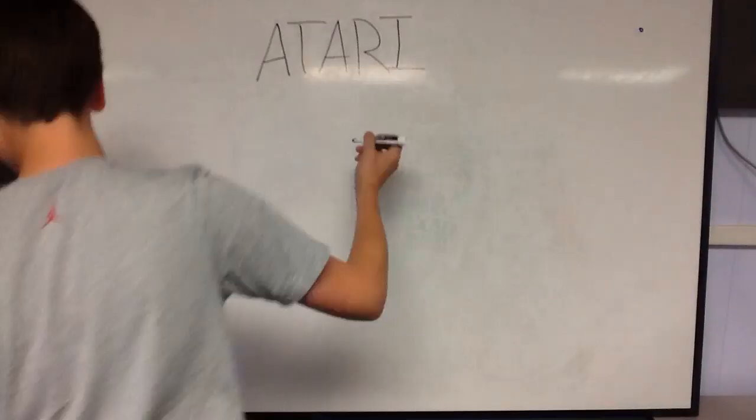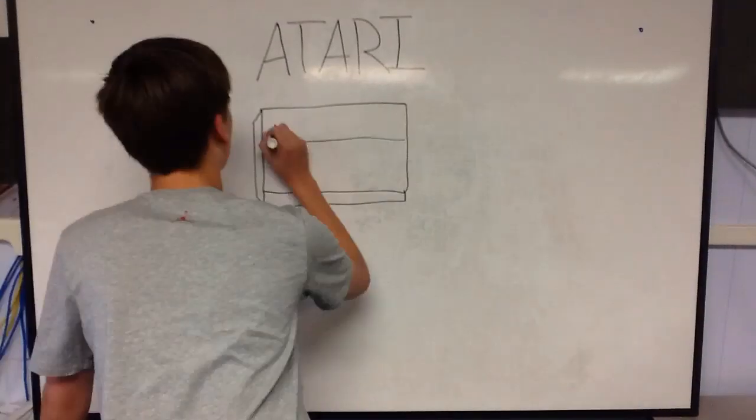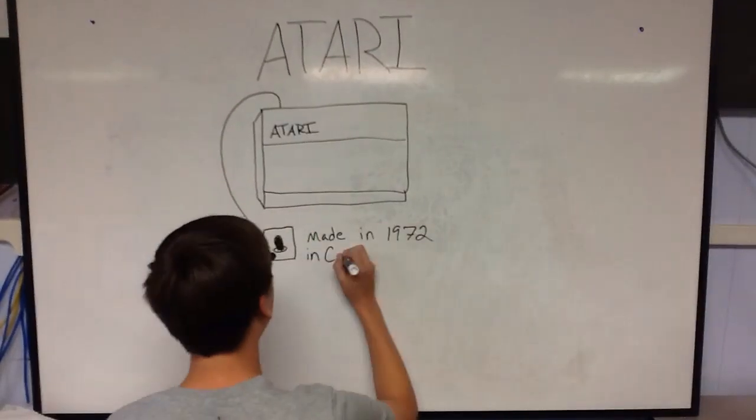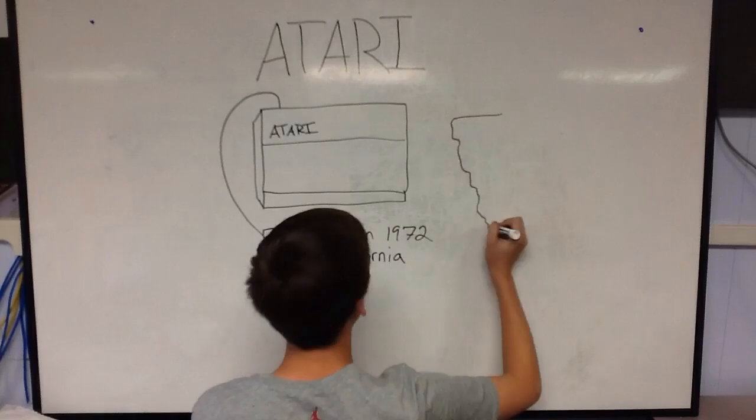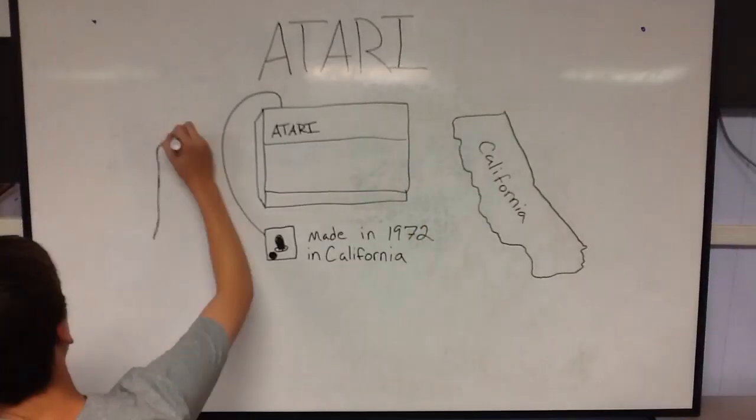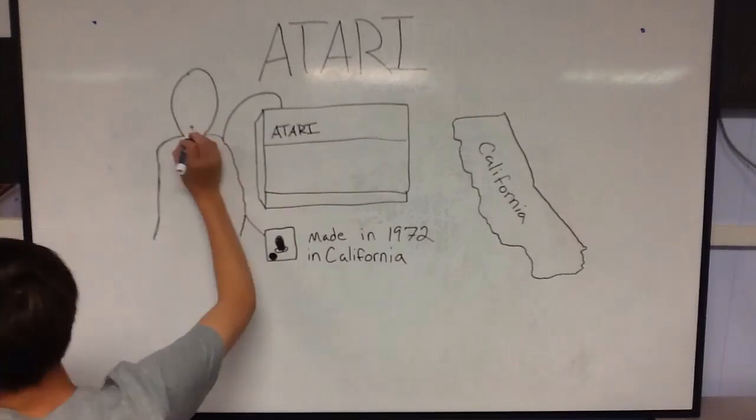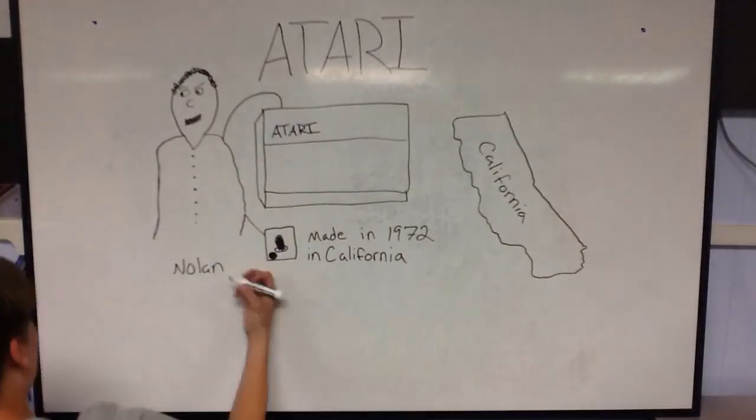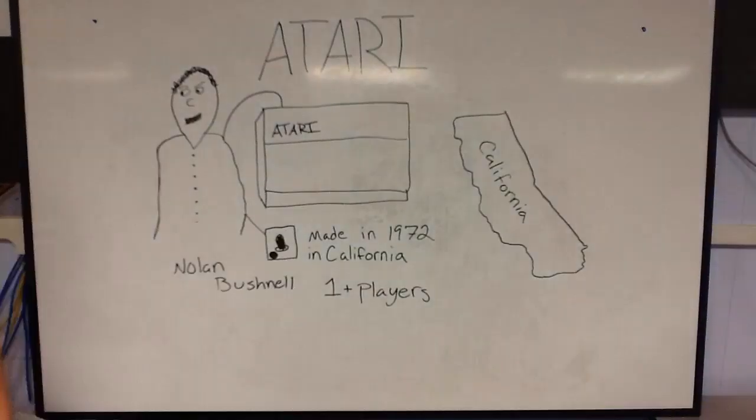Atari. Atari was the first console made. It had a joystick and it was made in 1972. It was made in California. The creator of Atari was Nolan Bushnell. You could play one or more players.